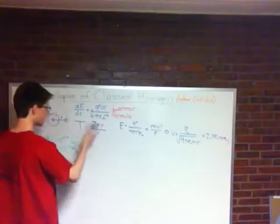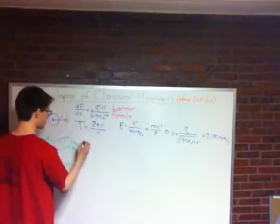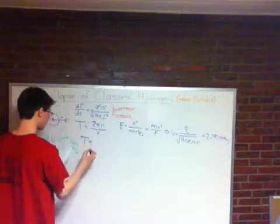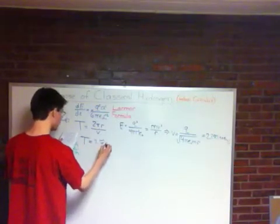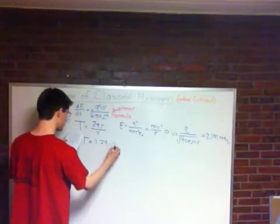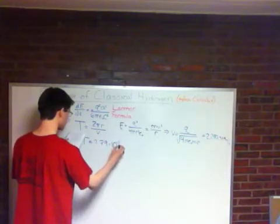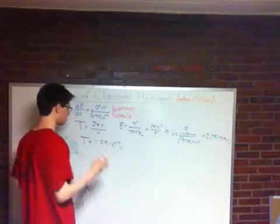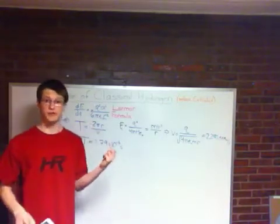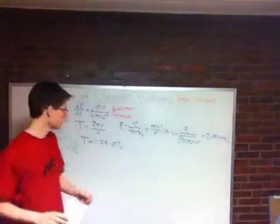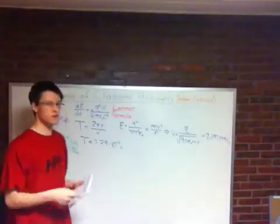So now we can find the period of the electron since we have its velocity. Again, we'll just plug everything in, and we'll find that t is equal to 2.79 times 10 to the negative 16th seconds. As you might expect, it's traveling a very small distance at a very fast speed, so the amount of time it's going to take to do that is going to be very small.